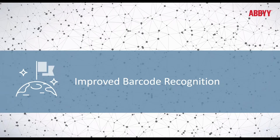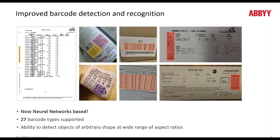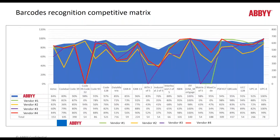The first topic we will cover is improved barcode recognition. With Update 2, barcode detection and recognition has been improved in a couple of ways. Firstly, it is now neural network-based. Secondly, the technology can now detect and recognize barcodes of various shapes and aspect ratios. This means there are more use cases in which barcode recognition can be utilized, and you can be less concerned about distortion. Barcodes on non-flat objects can now be captured, which is especially important for companies looking to enhance or implement mobile capture. ABBYY's barcode recognition technology is very competitive and scores well against other vendors for various barcode types.